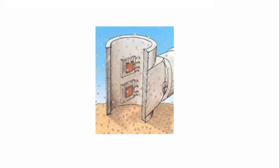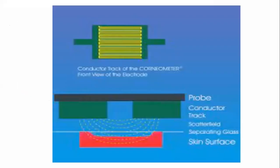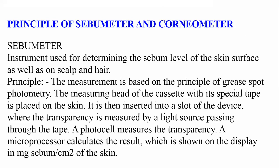Once the chamber is kept on the skin, due to the closed chamber, whatever water comes from the skin in the form of vapor is stopped and caught in the chamber itself. That vapor condenses into water, and how much water is present is calculated by using the sensors. So these are the three instruments generally used for determination of skin care products and their efficiency.